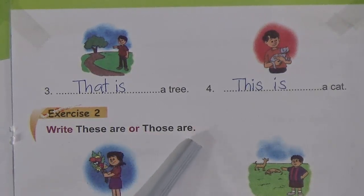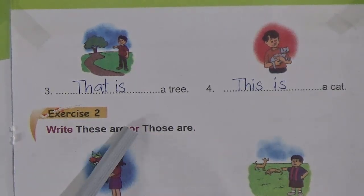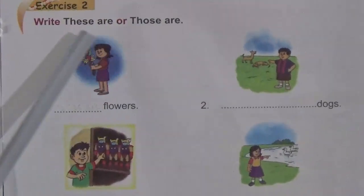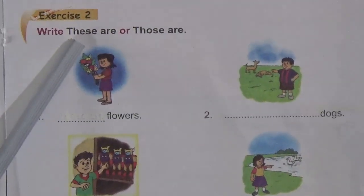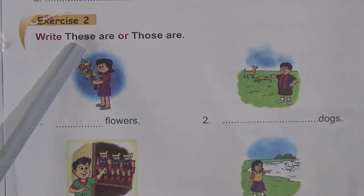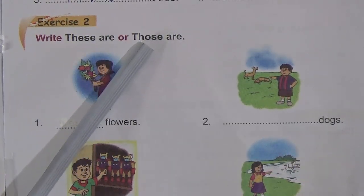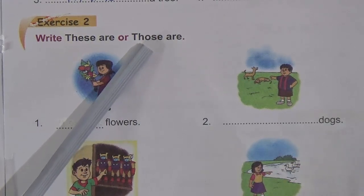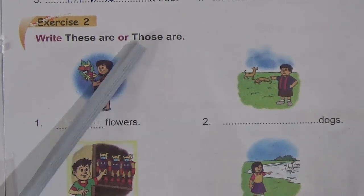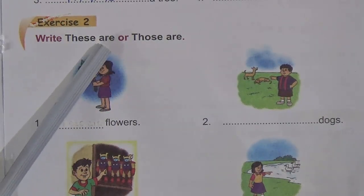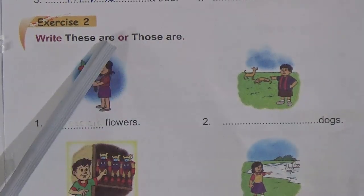Now exercise number two: write 'these are' or 'those are'. We use 'are' here because 'these' and 'those' both indicate plural — something more than one. When you talk about more than one thing, person, or animal, we use 'those', so our verb will also be plural — we will use 'are' instead of 'is'.